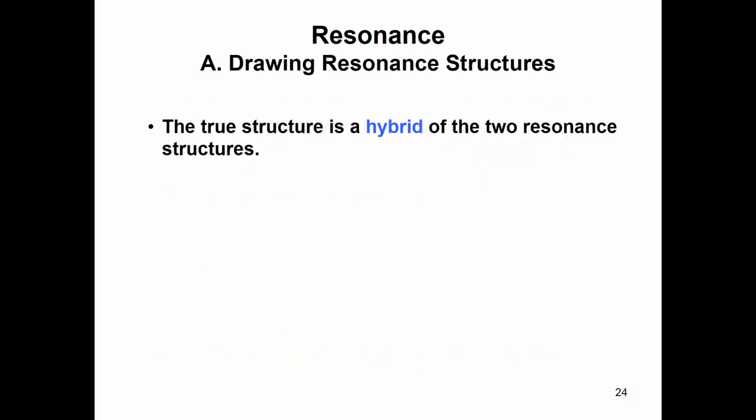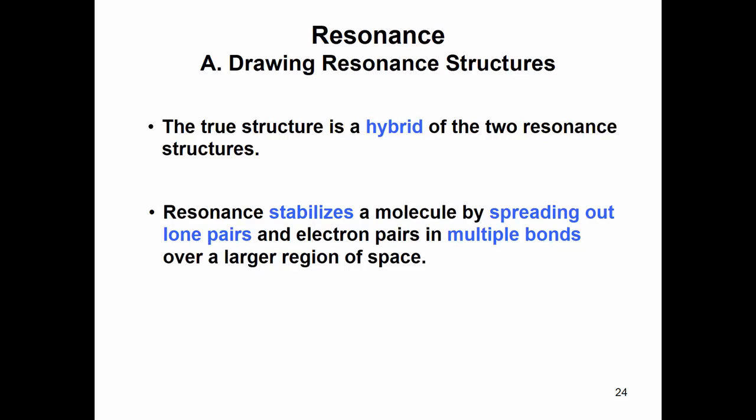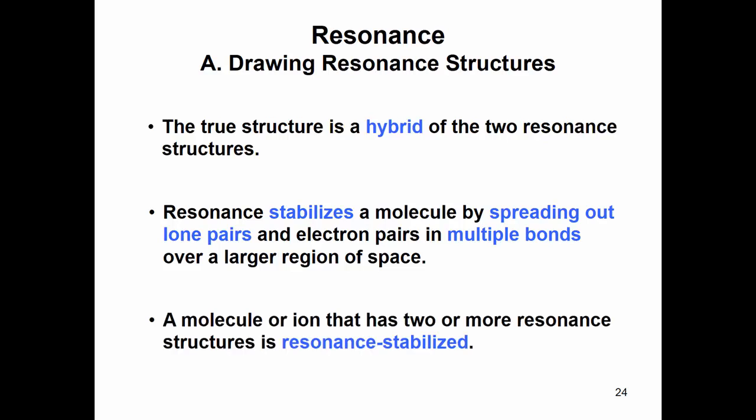The true structure is actually a hybrid of the two resonant structures, and when a molecule has a resonant structure, it is more stable, and it is said to be resonance stabilized. So if a molecule or an ion has two or more resonance structures that you can draw for it, meaning that the electrons in multiple bonds can be in different locations, then it is more stable.